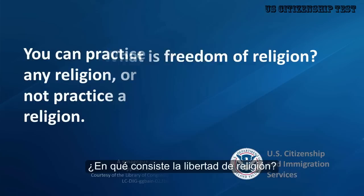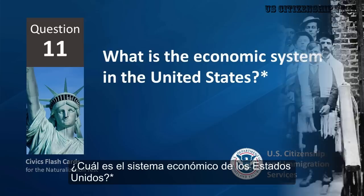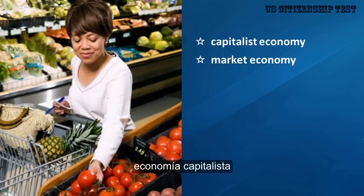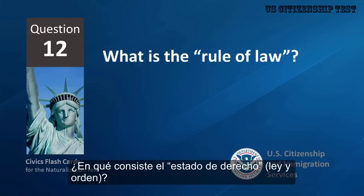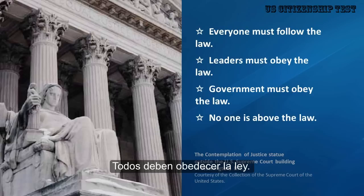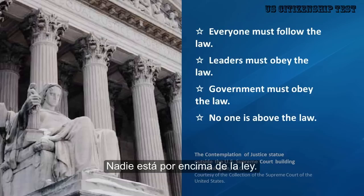What is freedom of religion? You can practice any religion or not practice a religion. What is the economic system in the United States? Capitalist economy, market economy. What is the rule of law? Everyone must follow the law, leaders must obey the law, government must obey the law, no one is above the law.